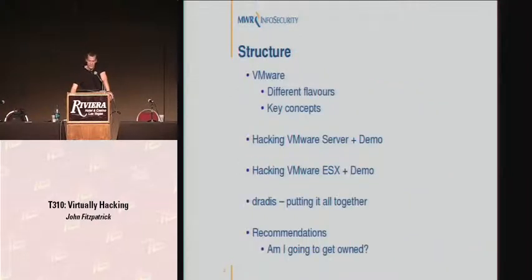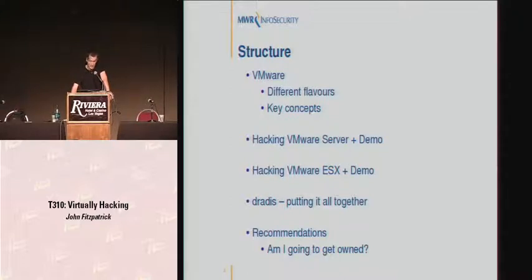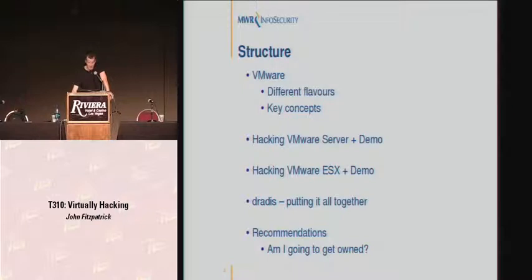The structure of the presentation: we're going to start by looking at VMware, the different flavors, and some of the key concepts. We'll move on to VMware Server and look at some ways of attacking that — I've got about six demos in total. Some of these demos are for ESX, and we'll look at the different attack vectors for that. We'll also look at a tool developed by a colleague of mine called Dradis, which is good for information sharing and structuring during a pen test. Then we'll shift on to some recommendations on how you can protect yourself if you're running VMware.